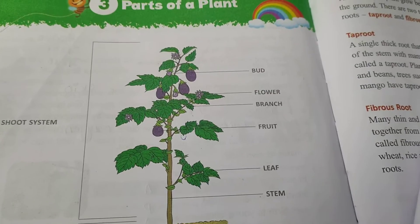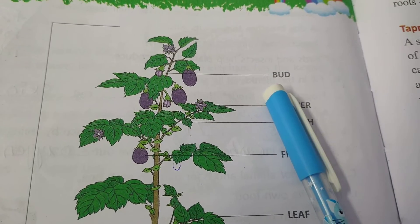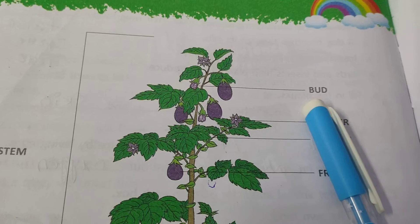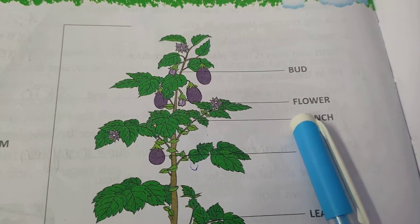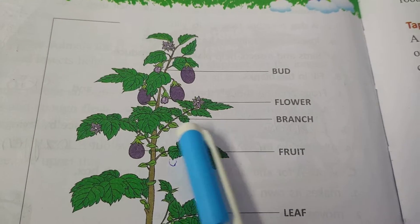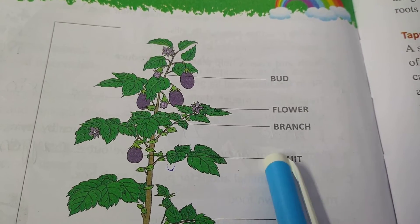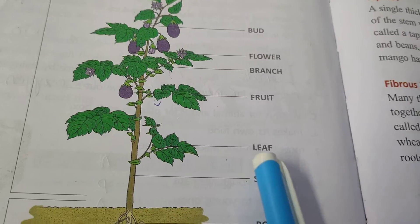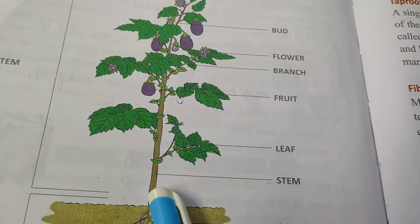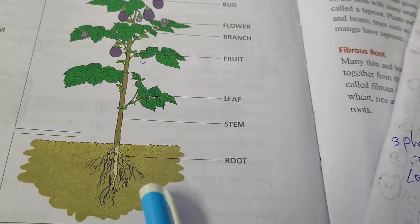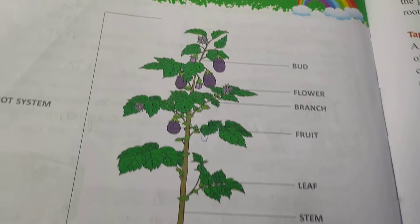Look at this picture — this is a plant. First one is bud, means shagufa. Next, flower means phool. Branch means shakhein. Fruit means phal. Leaf means patti. Next, stem means tana.